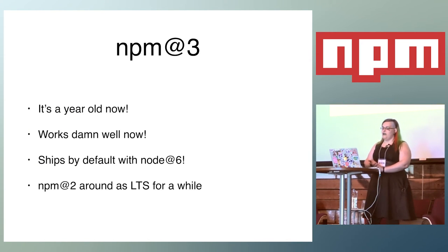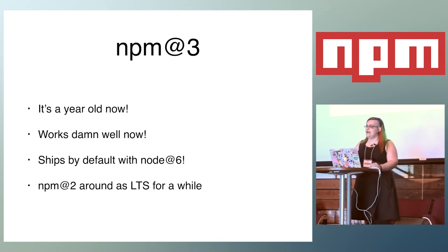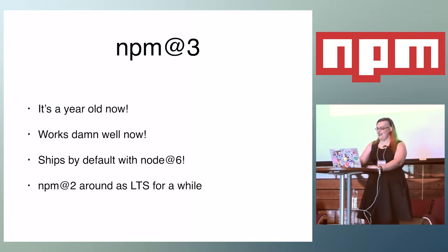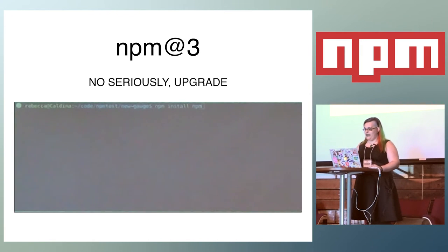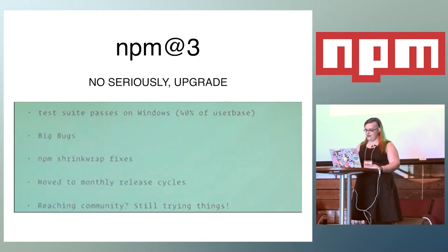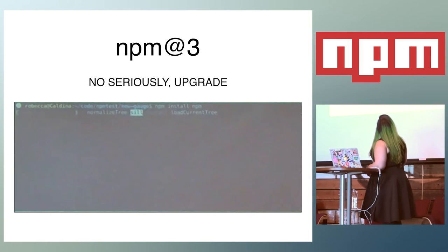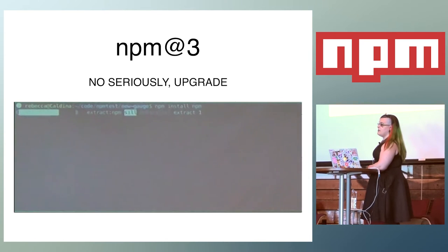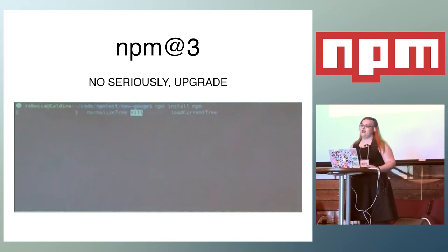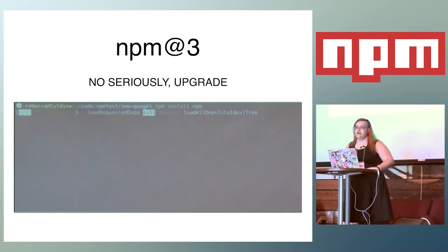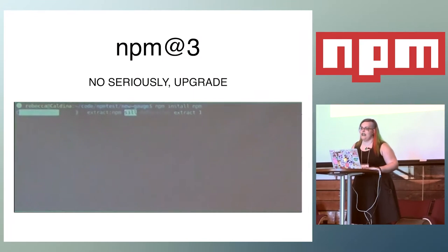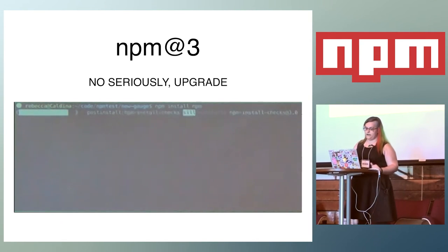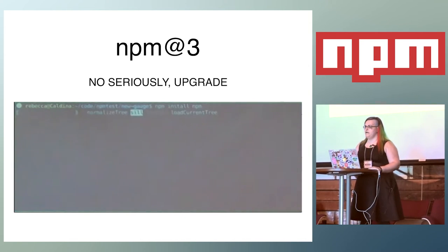NPM 2 is going to be in Node 4 for as long as that LTS lasts. Node 4 will have NPM 2 — please upgrade. And if you really need convincing for updating, this is what the progress bar looks like now. It's changed a lot since a year ago and it's actually really sweet. So if you want this progress bar, you want to update NPM. If you want to use it for your own project, there's Rebecca's erna/gauge on GitHub — just 'gauge' on GitHub — and you can get one of these sweet things for yourself and customize it. And there are way fewer bugs now in NPM 3.